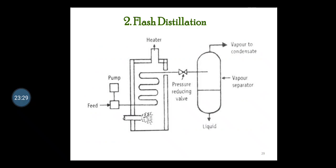Flash distillation (equilibrium distillation) is a continuous process in which the liquid mixture passes from a higher pressure zone to a lower pressure zone, resulting in sudden vaporization of the liquid. It is defined as a process in which the entire liquid mixture is suddenly vaporized (flashed) by passing the feed from a higher pressure zone to a lower pressure zone. Separation is attempted when the liquid and vapor phases are in equilibrium, and this method does not involve rectification.